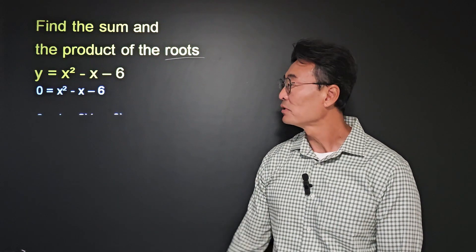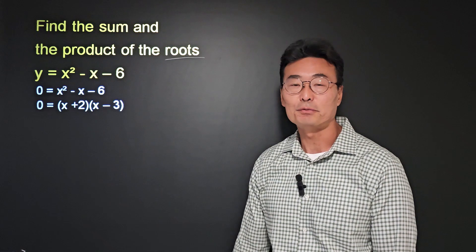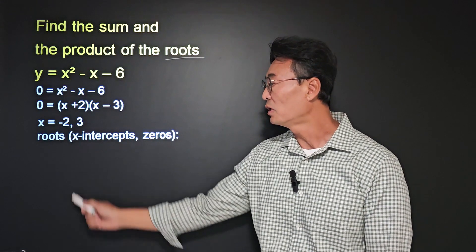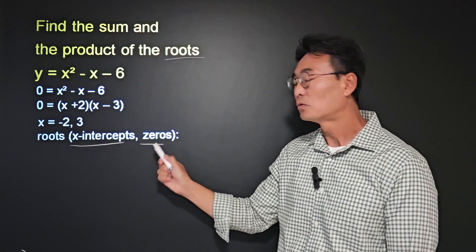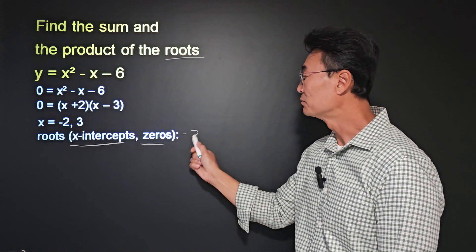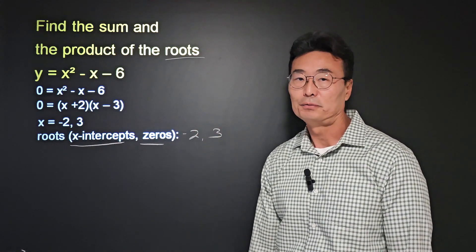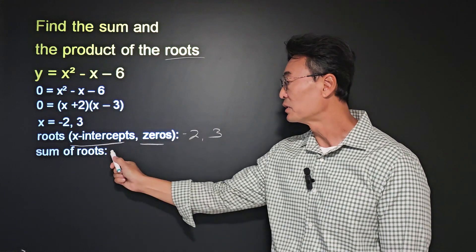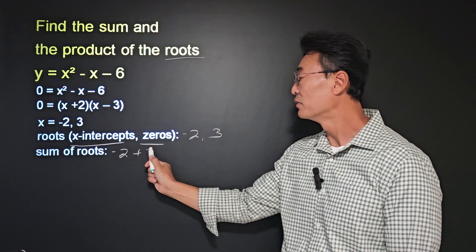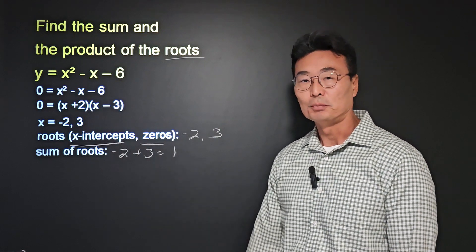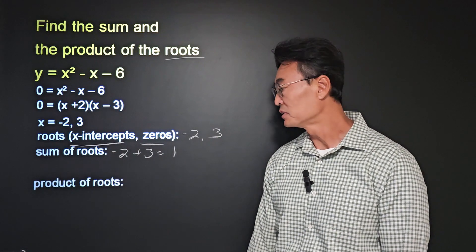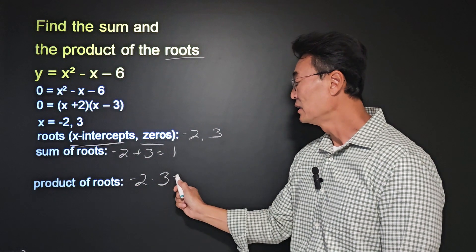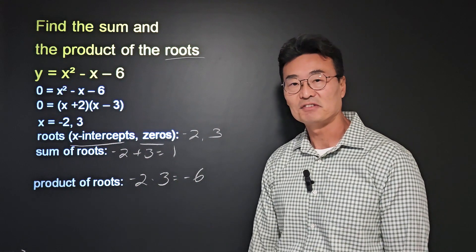Factoring this equation we get x plus 2 times x minus 3, where x equals negative 2 or 3. The roots, or x-intercepts, or zeros are negative 2 and 3. The sum of the roots is negative 2 plus 3 which equals 1, and the product of the roots is negative 2 times 3 which equals negative 6.